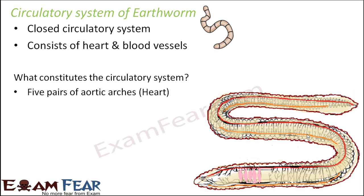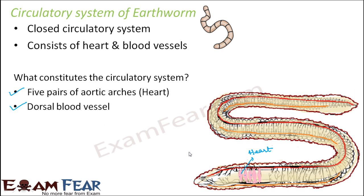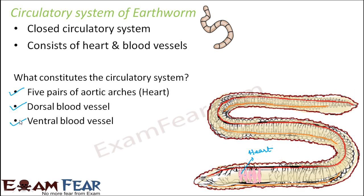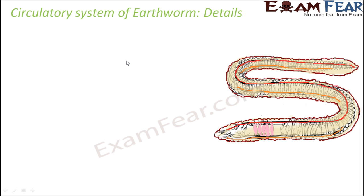What exactly are the parts of the circulatory system? What is the heart? The earthworm heart is nothing but five pairs of aortic arches. Here you can see one, two, three, four, five — so these five pairs of aortic arches act as a heart. The heart is essentially a pumping organ which pumps blood to the blood vessels. We have a dorsal blood vessel, which is very prominently seen on the dorsal side of the earthworm — that red-colored blood vessel — present throughout the length of the earthworm. There is also a ventral blood vessel on the ventral side, towards the belly side. These three things together form the circulatory system of the earthworm.